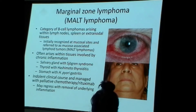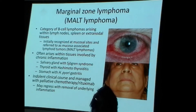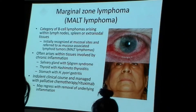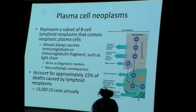The clinical course is usually indolent. Many individuals are treated by surgical removal, and some individuals will even be cured if the underlying condition is treated. So if you treat someone with H. pylori with appropriate antibiotic therapy, the lymphoma may go away. This is rather remarkable when you think about the concepts we learned about neoplasia being a genetic disease.